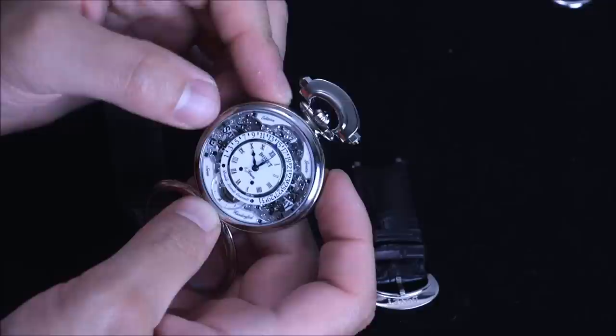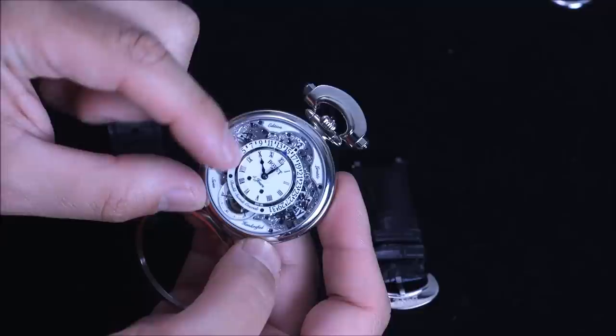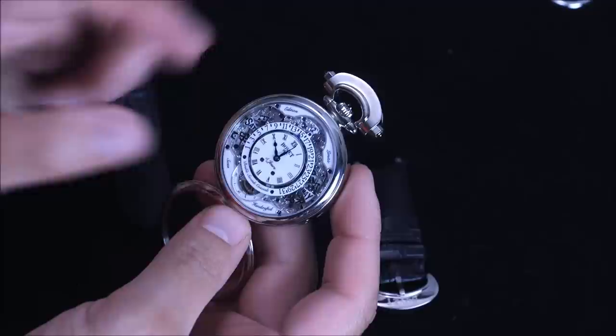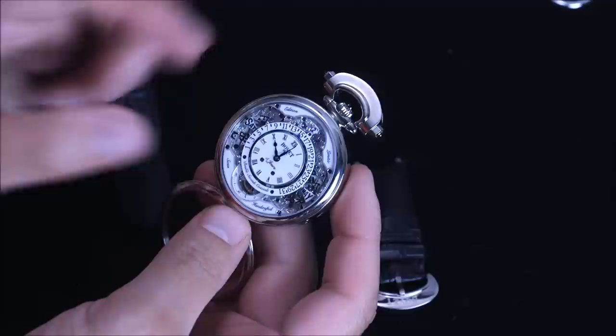Here you have the day of the week. You can see it says Saturday. Here you have the month. You can see it says May. Over here is a leap year indicator, and then there's a retrograde dial for the date, which goes around the periphery of the time. From here is 1, here is 31, and then when it gets to 31, it just jumps back, and you can see the little hand right there.